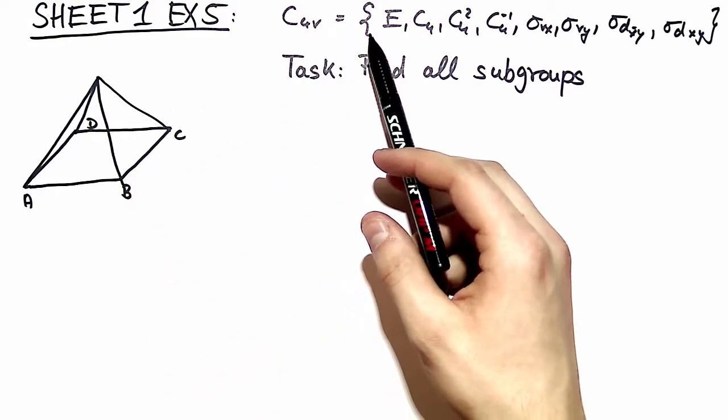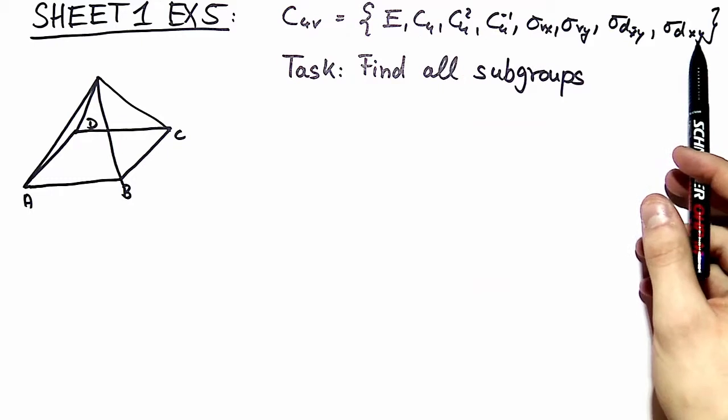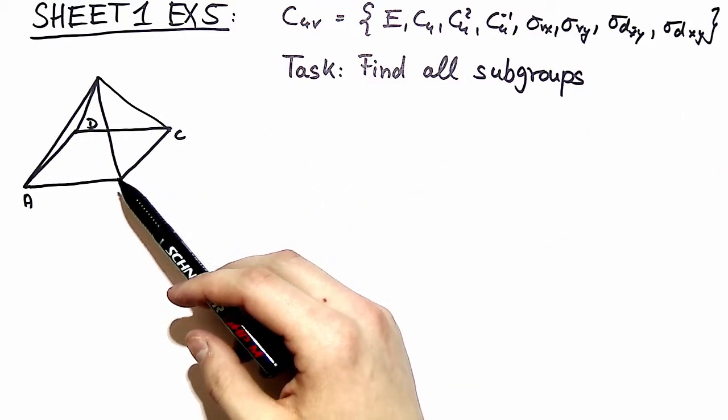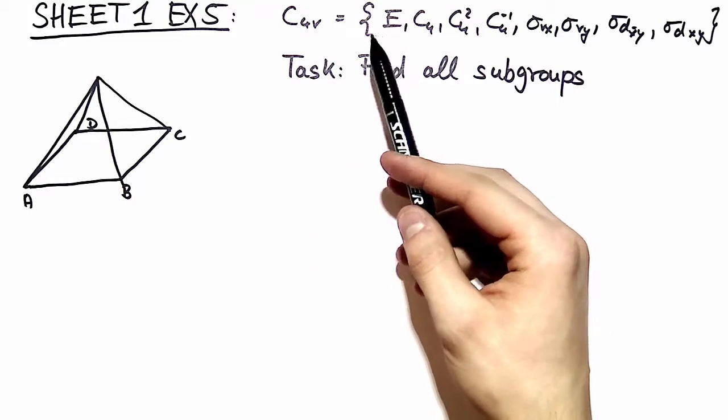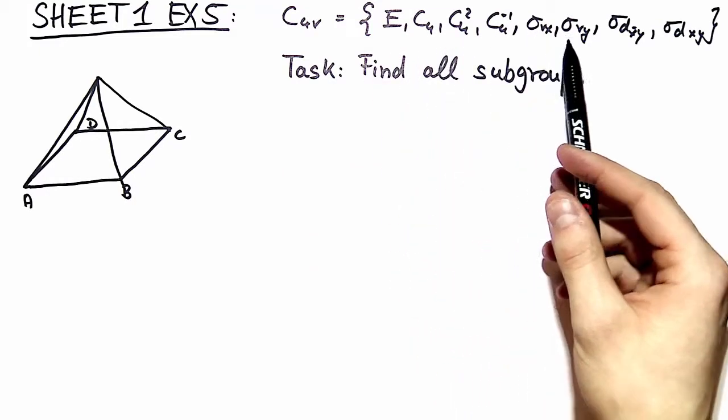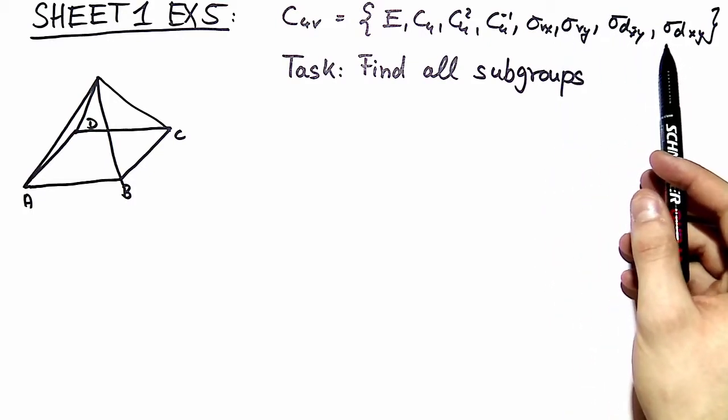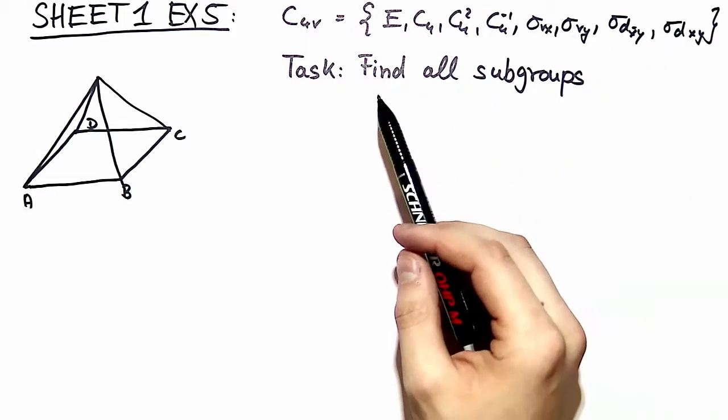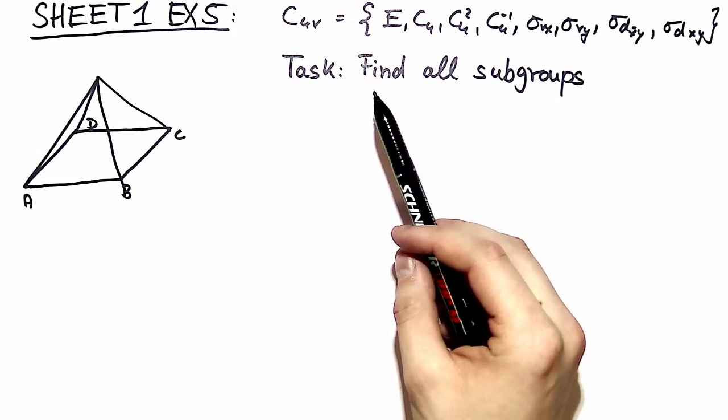The elements of C4V are listed right here - you can extract them out of the square base of this pyramid. It's the identity, a fourfold rotation, and two times two mirror planes. Our task is now to find all subgroups.